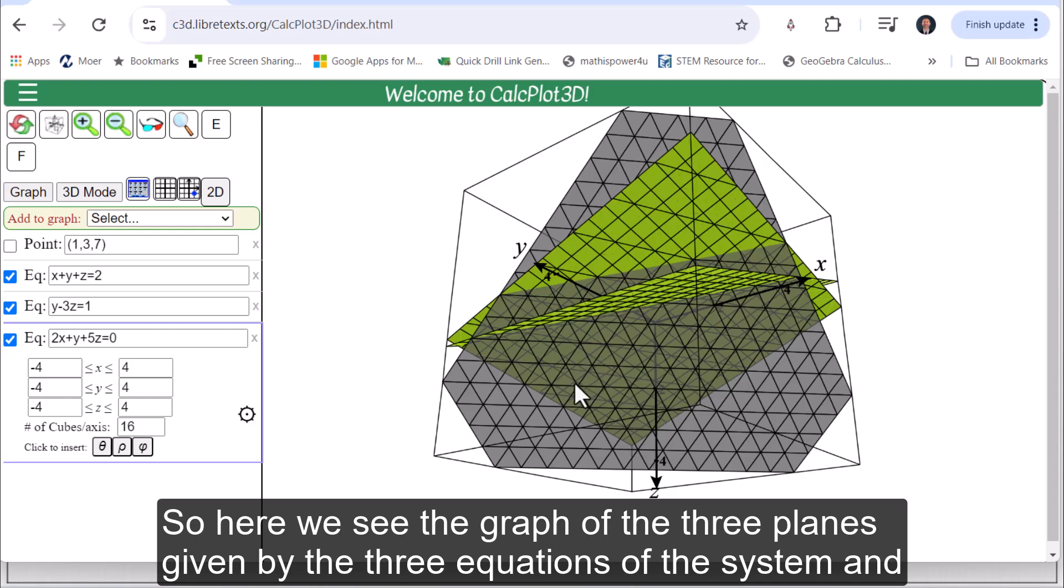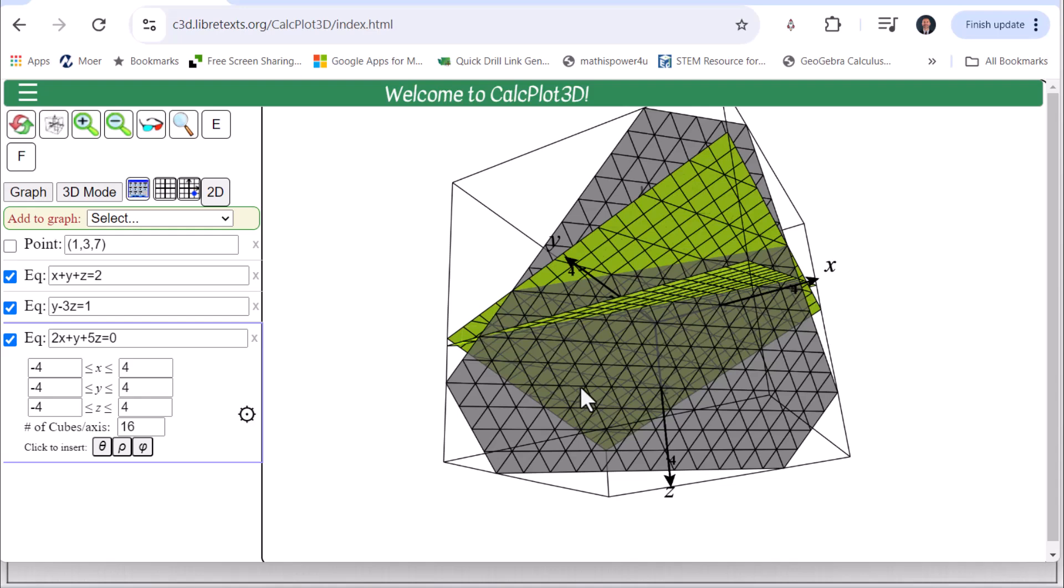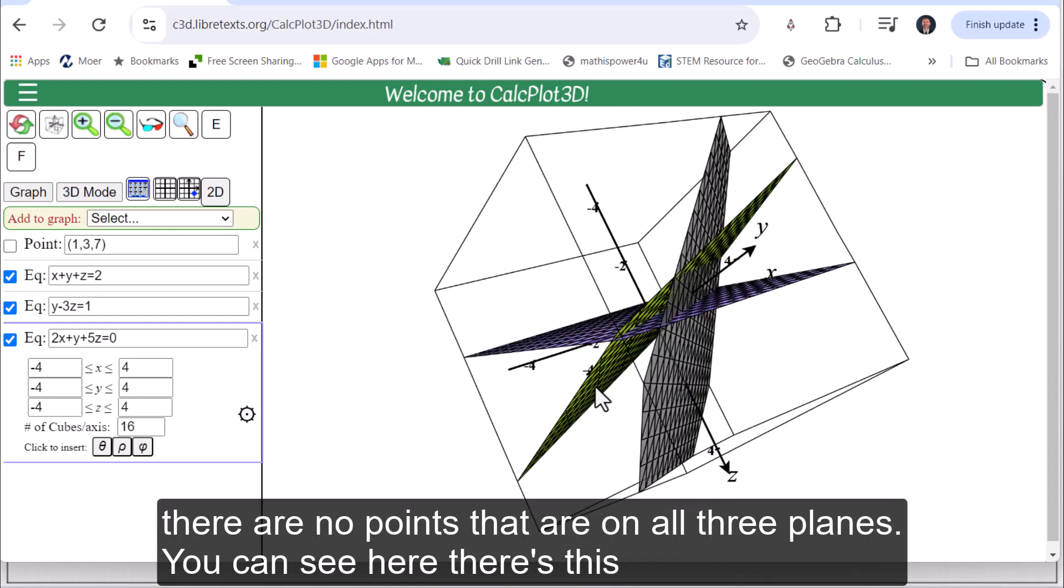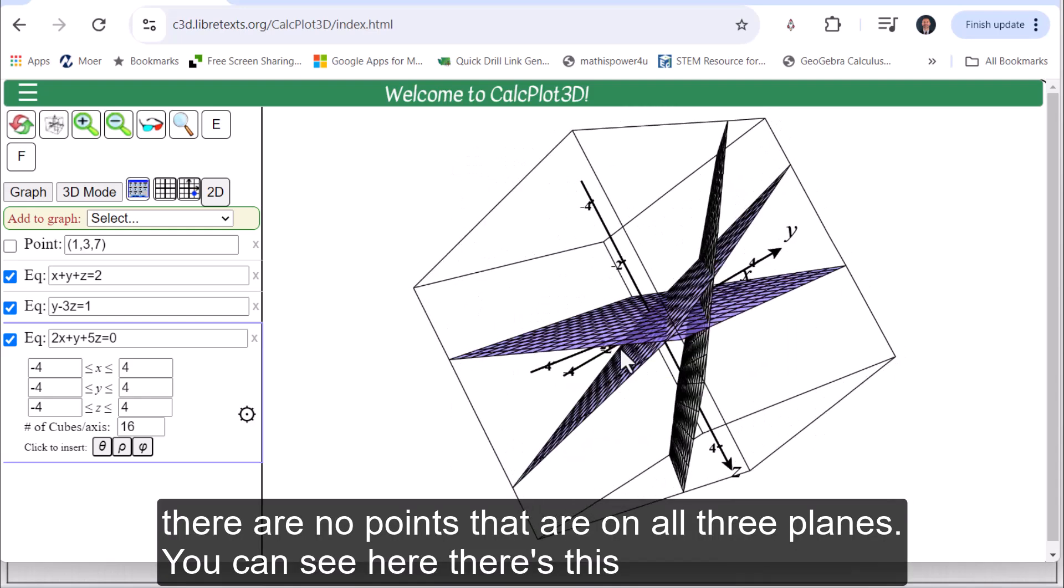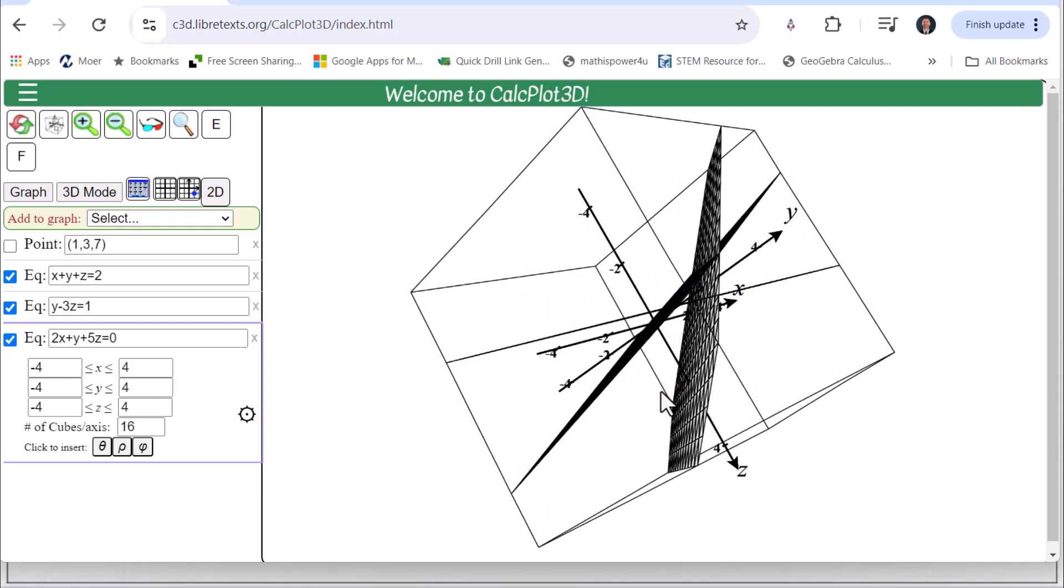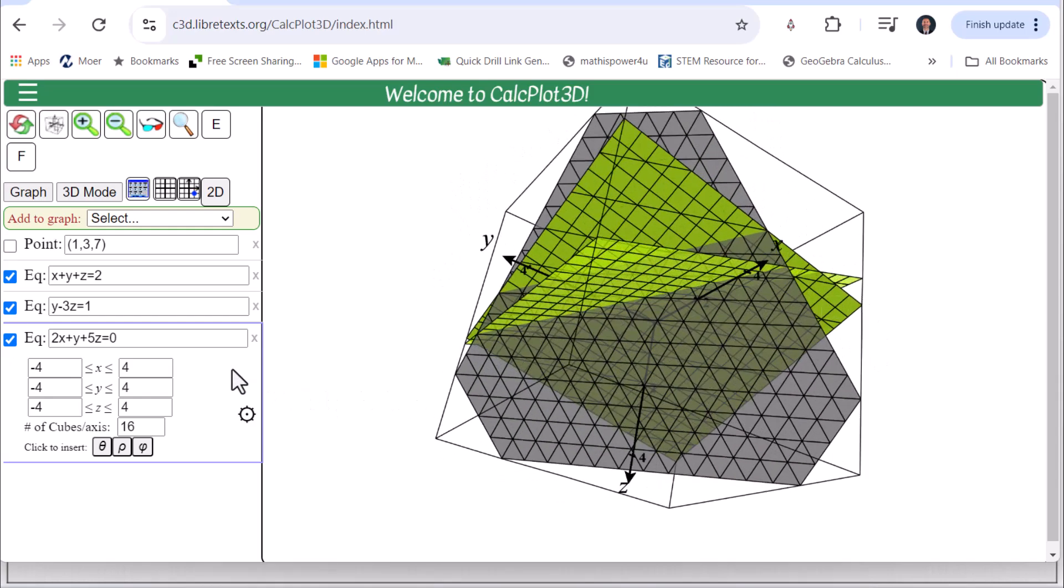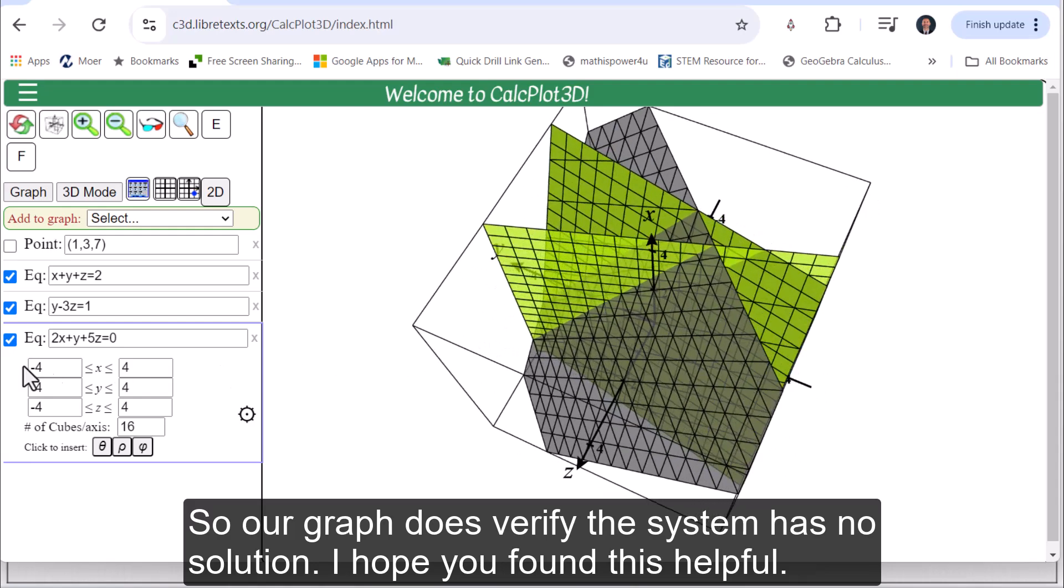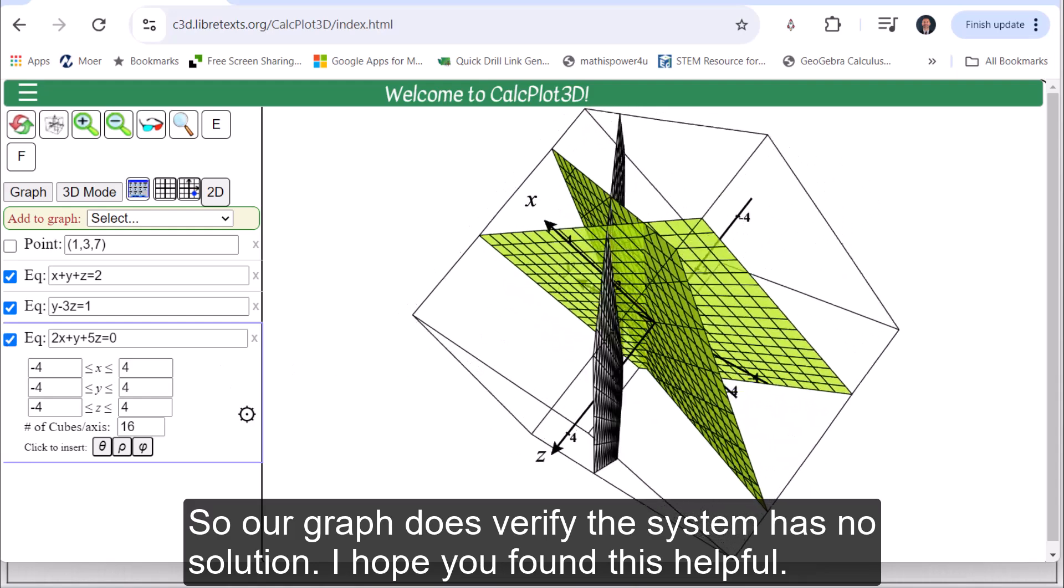So here we see the graph of the three planes given by the three equations of the system. And there are no points that are on all three planes. You can see here there's this triangular region in the middle of all three planes. So our graph does verify the system has no solution.